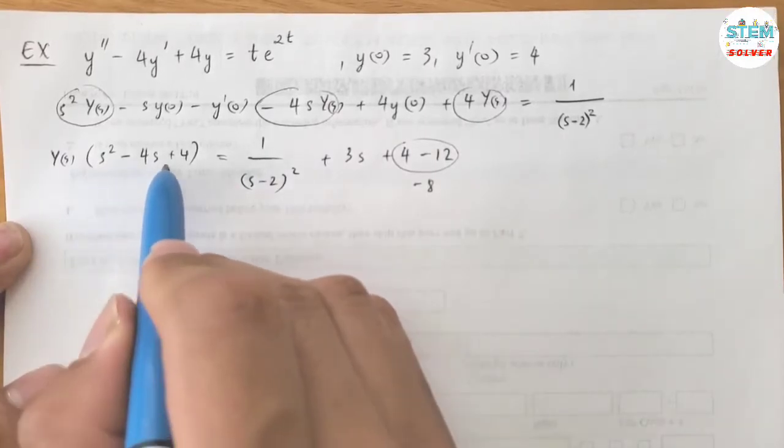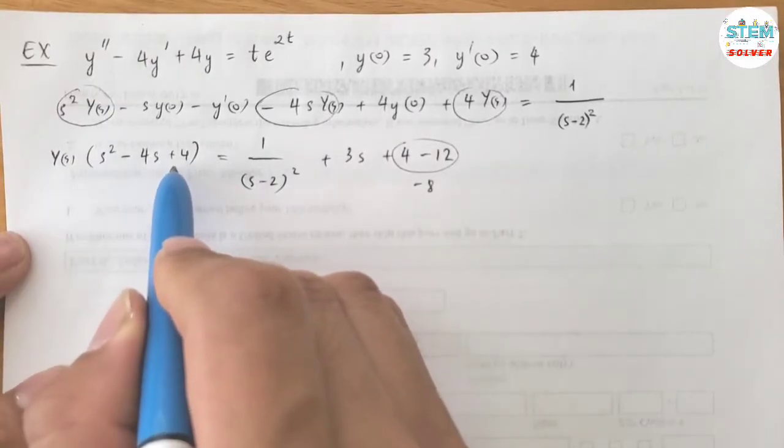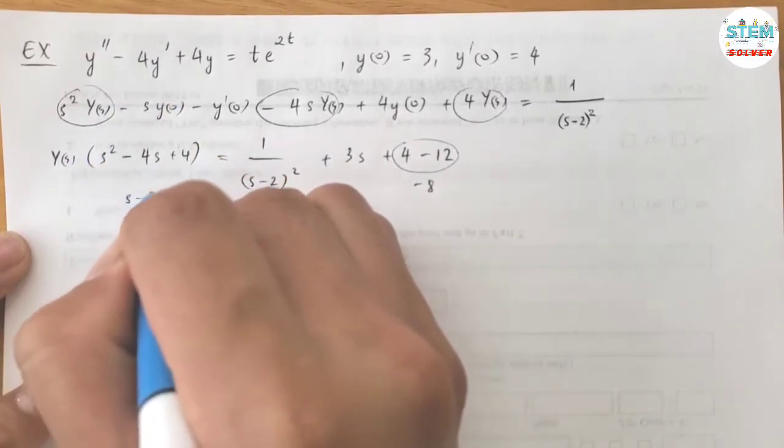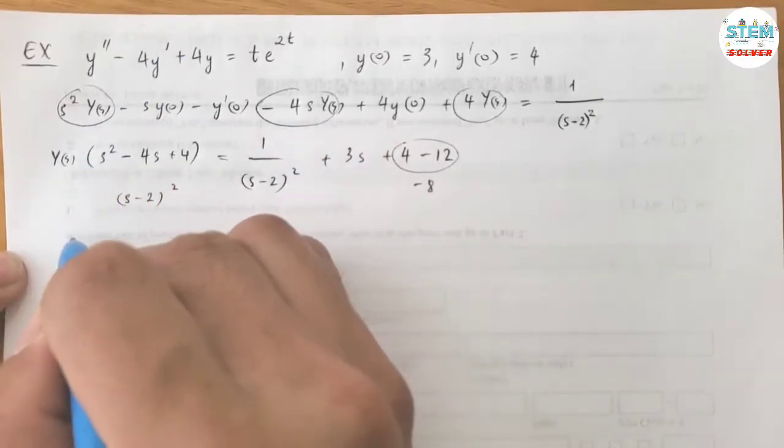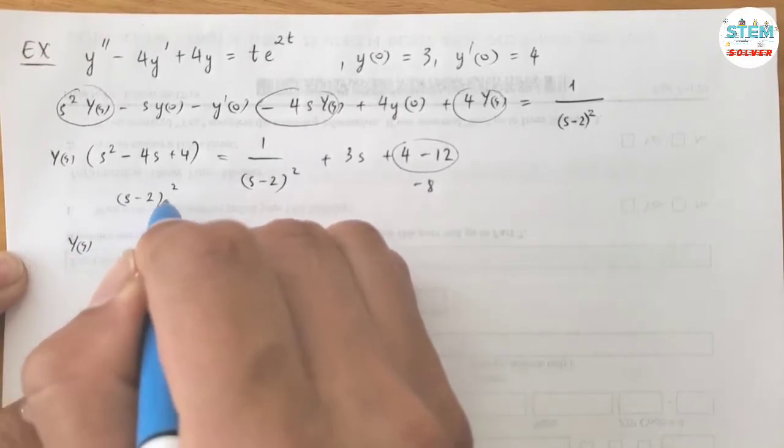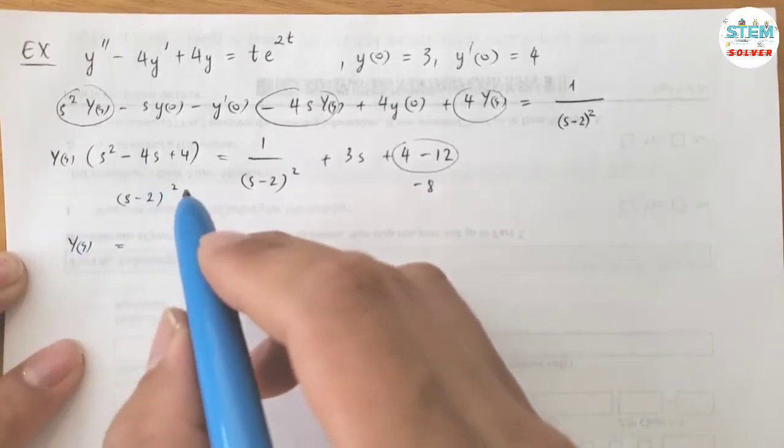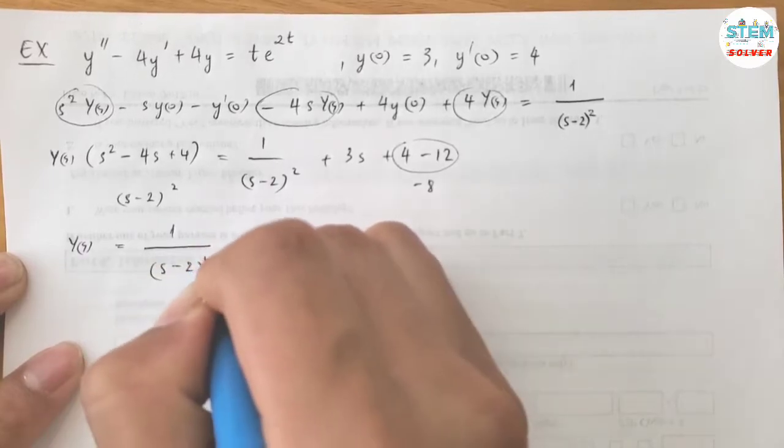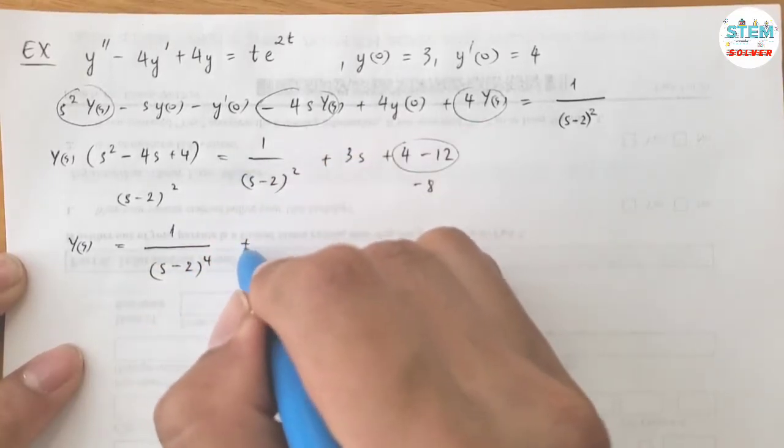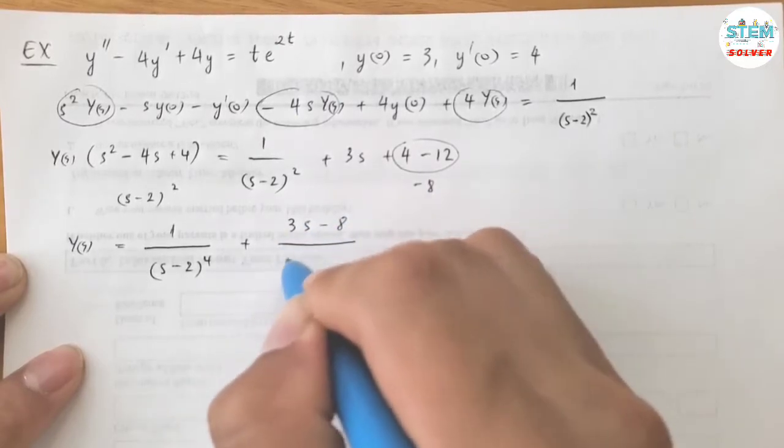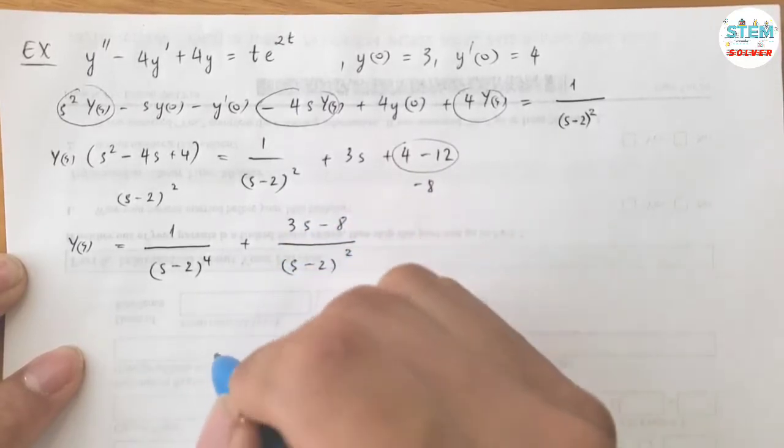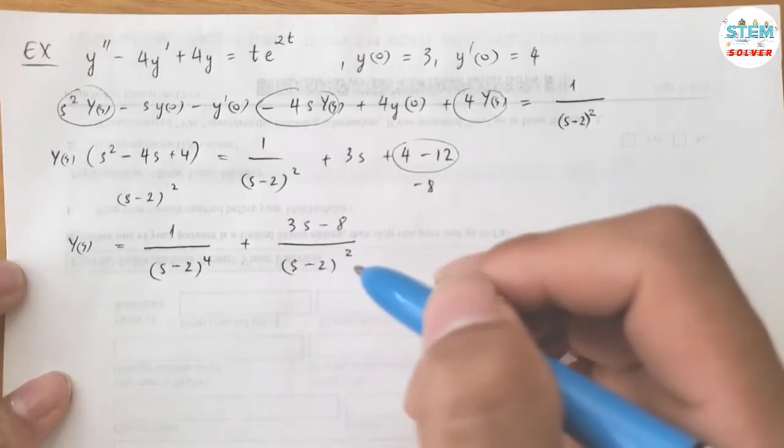Alright, so all of this becomes negative 8. Alright, so S squared minus 4S plus 4 can be written as S minus 2 squared. This is a perfect square. Now divide both sides by S minus 2 squared to get capital Y of S alone. So I have 1 over S minus 2 to the 4th power plus 3S minus 8 over S minus 2 squared.